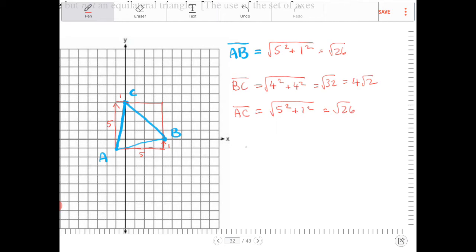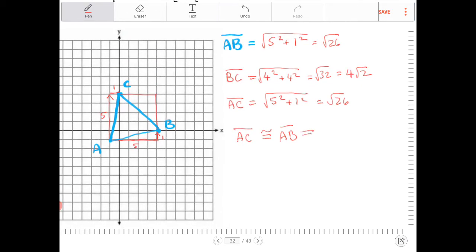So, here we can make the argument that AC is congruent to AB and not congruent to BC. Triangle ABC is an isosceles triangle and not an equilateral triangle.